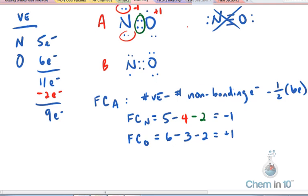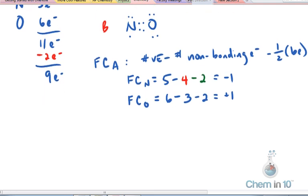Let's look at structure B. Structure B, formal charge of nitrogen, is 5 valence electrons minus the number of unbonded electrons, which is 3, minus the number, half the number of bonding electrons. There are 4 electrons involved in the bond, so half of that is 2, and the formal charge of nitrogen is 0. I like that already.